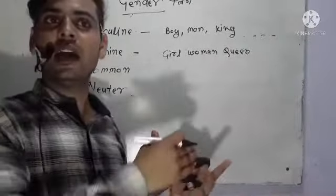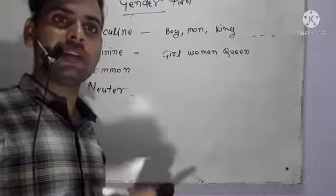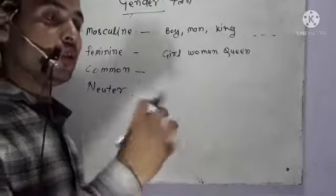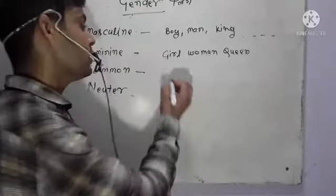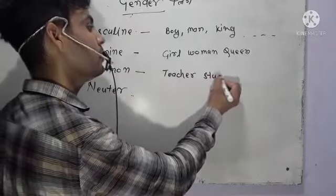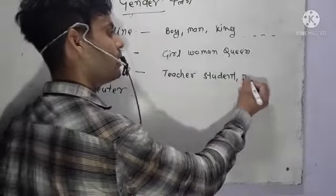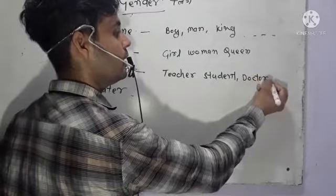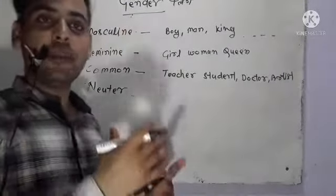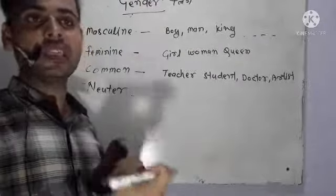This is a different thing. If we have specific words, we can discuss some suffix and prefix. In common gender, we keep those words which make sense for both. For example: teacher, student, doctor, artist. These words can apply to both male and female. The condition of female and male could be fixed — they have both senses.